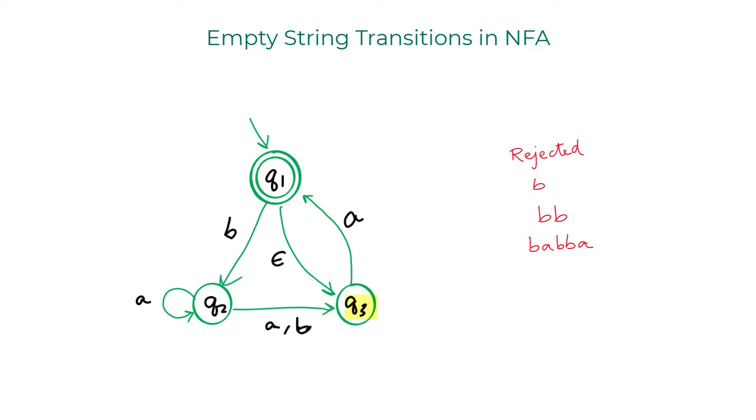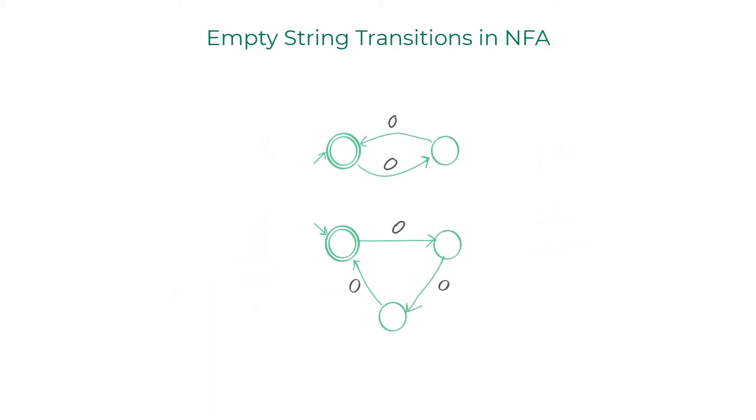The epsilon transitions add a lot of convenience to NFAs. For example, to build a machine that accepts the union language of two NFAs, you can connect both of them using epsilon transitions. And there you go. You now have a machine that accepts the union language of the two NFAs. No need to create the tedious product automaton like you did for the DFAs.